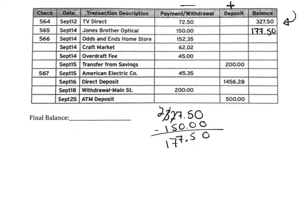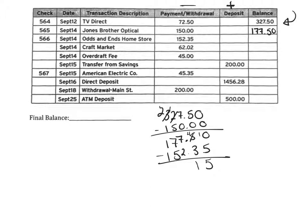Then I withdraw another $152.35. You can't do 0 minus 5, so do not forget to borrow. After borrowing: 10 makes 5, so we have 15, then 5 and 2. Now we have $25.15.